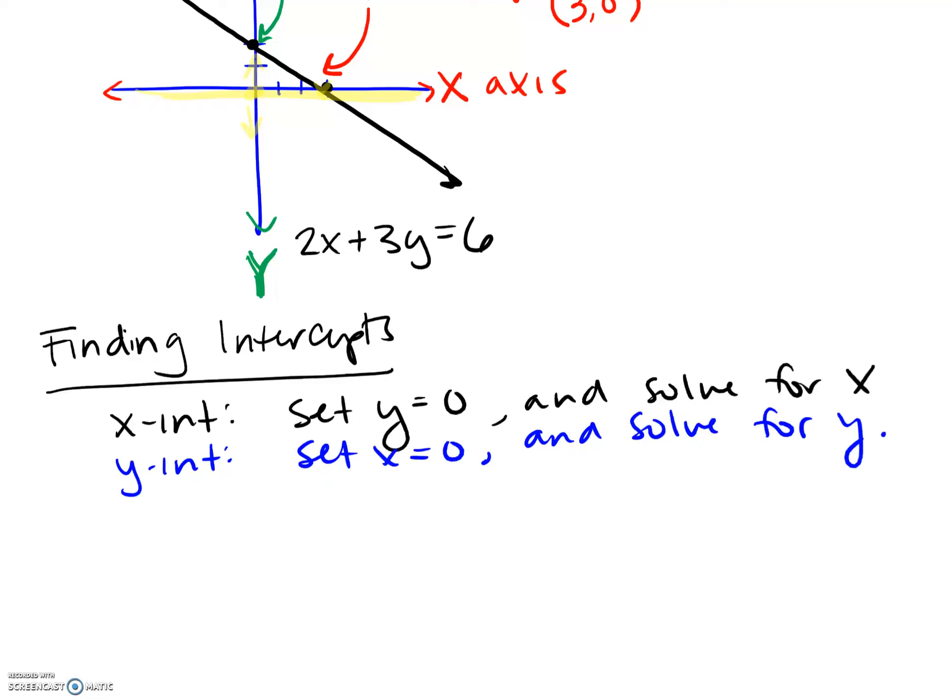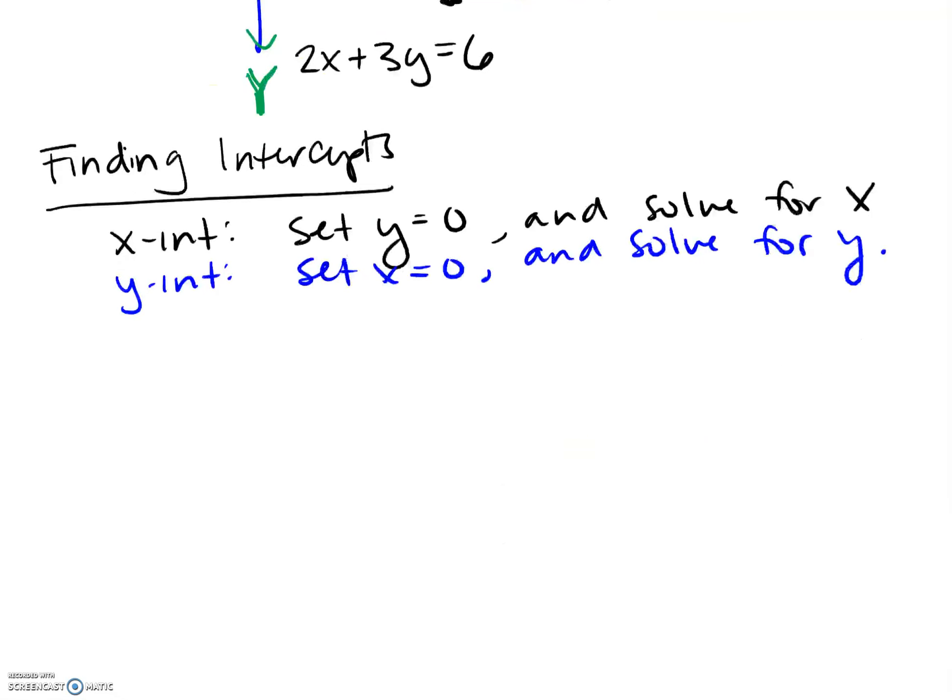Finding intercepts if they work out nice and evenly is the easiest way to graph your equations that are in standard form. So I'll do one more example. If you already get it, you don't need to watch it. If you want to test it on your own, I say I'll write this down, and then you pause, try it, and then check your work versus mine.